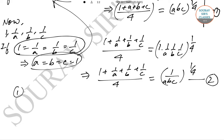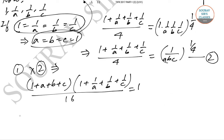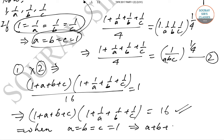Now we multiply equation 1 and equation 2. This gives us (1 + a + b + c)(1 + 1/a + 1/b + 1/c) / 16 = 1, which satisfies our given condition. This condition is satisfied when a = b = c = 1, which means a + b + c = 3. So the statement given is true.